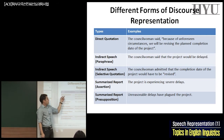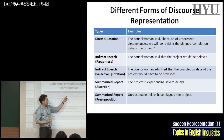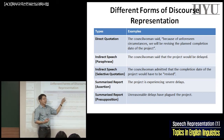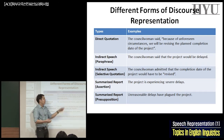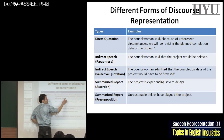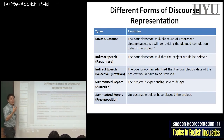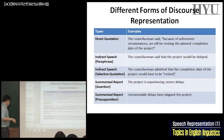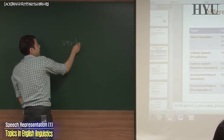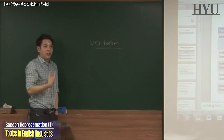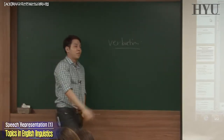When you start with direct quotation — that's direct speech — the console woman said, 'Because of unforeseen circumstances, we'll be revising the plan completion date of the project.' You see that there are quotation marks, and whatever is said is reported verbatim. Verbatim means there's no change in the word; it's reported as is.